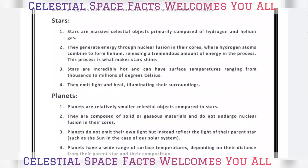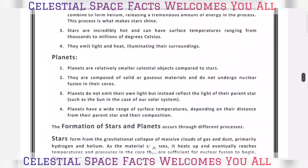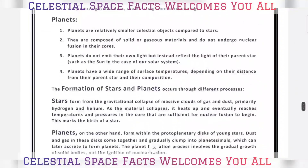Stars are incredibly hot and can have surface temperatures ranging from thousands to millions of degrees Celsius. They emit light and heat, illuminating their surroundings. Planets, by contrast, are relatively smaller celestial objects composed of solid or gaseous material, and do not undergo nuclear fusion in their cores. Planets do not emit their own light, but instead reflect the light of their parent star.